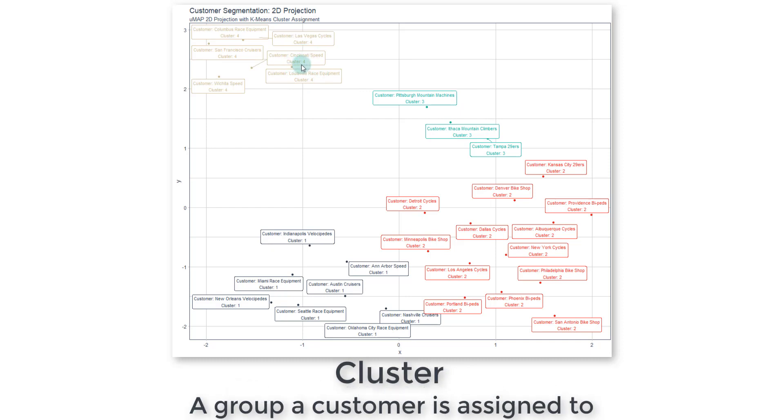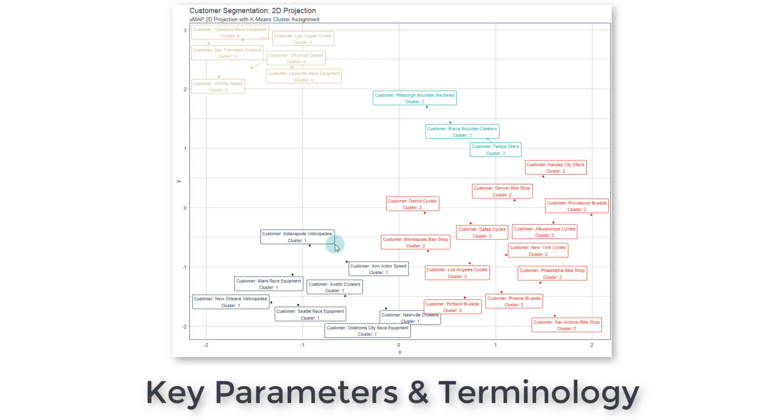So you can see here we've got cluster four, and these are all the customers that are in there. Cluster three is right here. Cluster two is here, and then this is cluster one. So what we're trying to do is use the K-Means algorithm, and there's a couple parameters that we'll talk about once we get into the function. But what I want you to understand is a little bit about how it works so you understand what we're going to be doing.